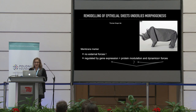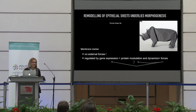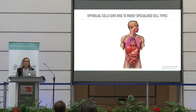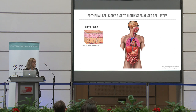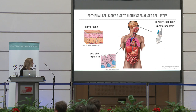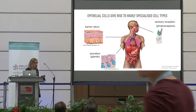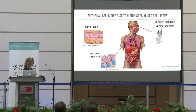It is epithelial sheets that rearrange during the process of morphogenesis. Epithelial cells give rise during development to different kinds of cells — like our skin, which is important as a barrier function. They give rise to secreting cells, like glands, or even more complex cells like photoreceptor cells in our retina that allow us to see and perceive light and structures.